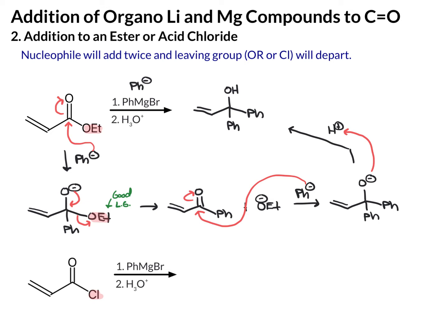And here we have our alcohol product. In the second example, it's an almost identical substrate except Cl is the leaving group instead of OEt. Mechanistically, this reaction is going to be identical to the one above. The only difference is you'll have a Cl here — on this step, the Cl will act as a leaving group to give you Cl minus. The major organic product is identical.